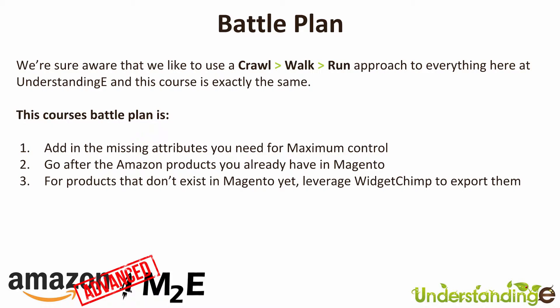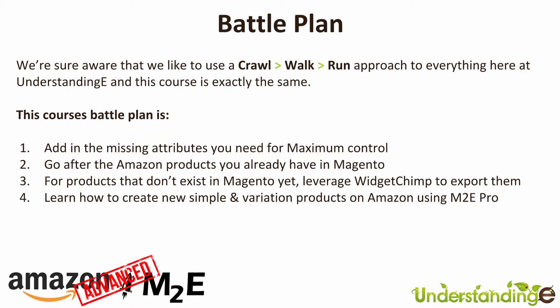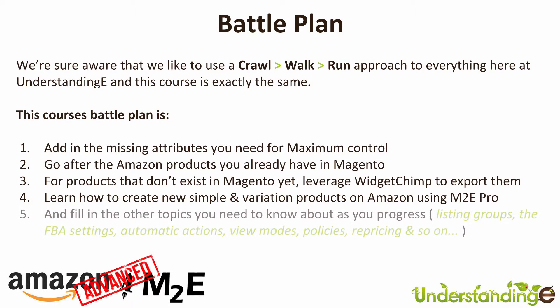From there, we're going to learn how to create new simple and variation products on Amazon utilizing M2e Pro. We'll start off really simple — create a new simple product — and then work our way up to variation products. If you can do one variation product, you can do them all. It's really straightforward, especially in M2e Pro — it's nice and easy.